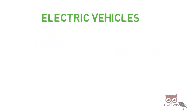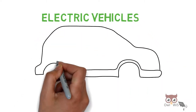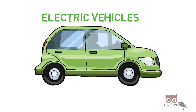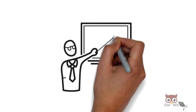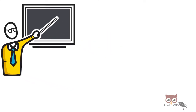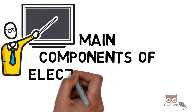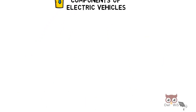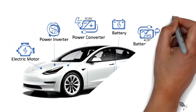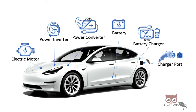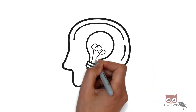Electric vehicles in almost all types have a few major components. In this video, let us understand the main components of electric vehicles. The list includes: charge port, battery charger, battery pack, battery management system, power converter, power inverter, and electric motor.